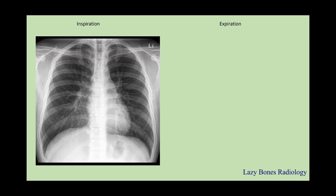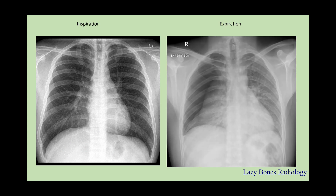Here are examples of inspiration and expiration. During inspiration, the lungs are expanding, while during expiration, the lungs are being compressed. As you can see, the level of the diaphragm is lower during inspiration while higher during expiration. We use expiration to identify pneumothorax within the chest cavity.